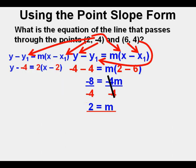Here's the equation with the numbers filled in. We have y minus negative 4 equals 2 times quantity x minus 2.